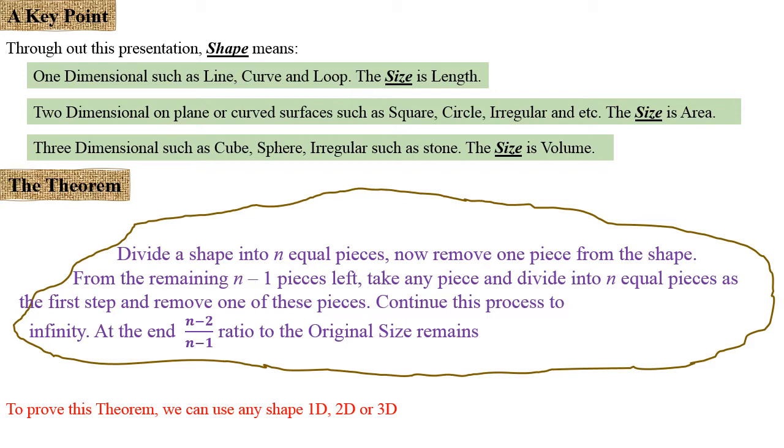Or two-dimensional on plane or curved surfaces such as square, circle, irregular shapes, and the size is area. Three-dimensional such as cube, sphere, irregular shapes, and the size is volume.